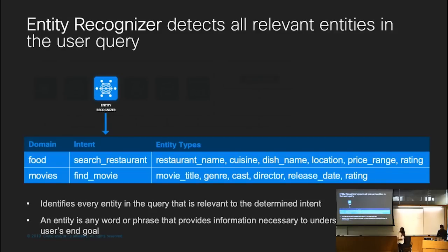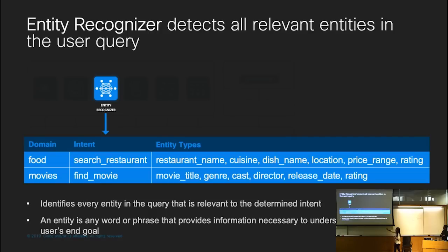The next component is the entity recognizer. The entity recognizer detects certain key words or phrases — which we call entities — from the query. The set of entities considered important varies by the domain and intent. For the food ordering domain with the search restaurant intent, entities include a restaurant name, a cuisine, a dish name, etc. For the movies domain with a find-movie intent, entity types include a movie title, a genre name, a cast member, etc. This is a sequence tagging model, using models like a maximum entropy Markov model, a CRF, or an LSTM, with features like bag of words, character n-grams, gazetteer matches, or character/word embeddings for a recurrent neural network approach.